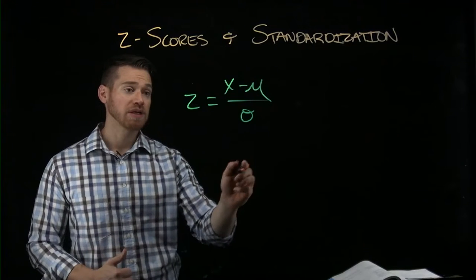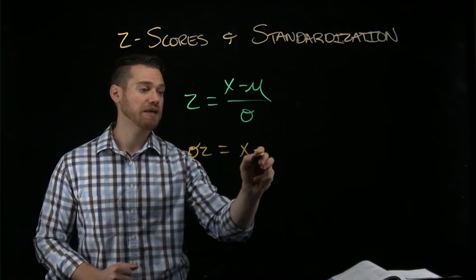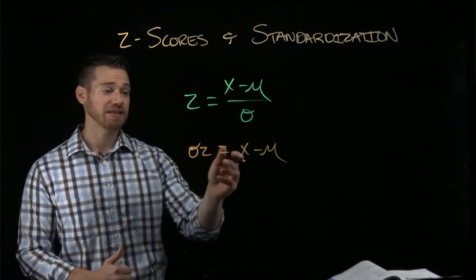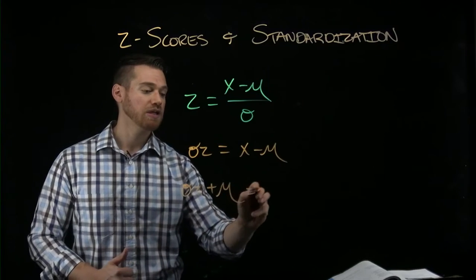We can rearrange our equation and we can see we can do sigma z equals x minus mu. And then we want to isolate to solve for x, so we're going to do sigma z plus mu equals x.